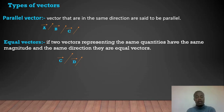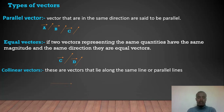Equal vectors have the same magnitude and same direction. Collinear means along the same line.